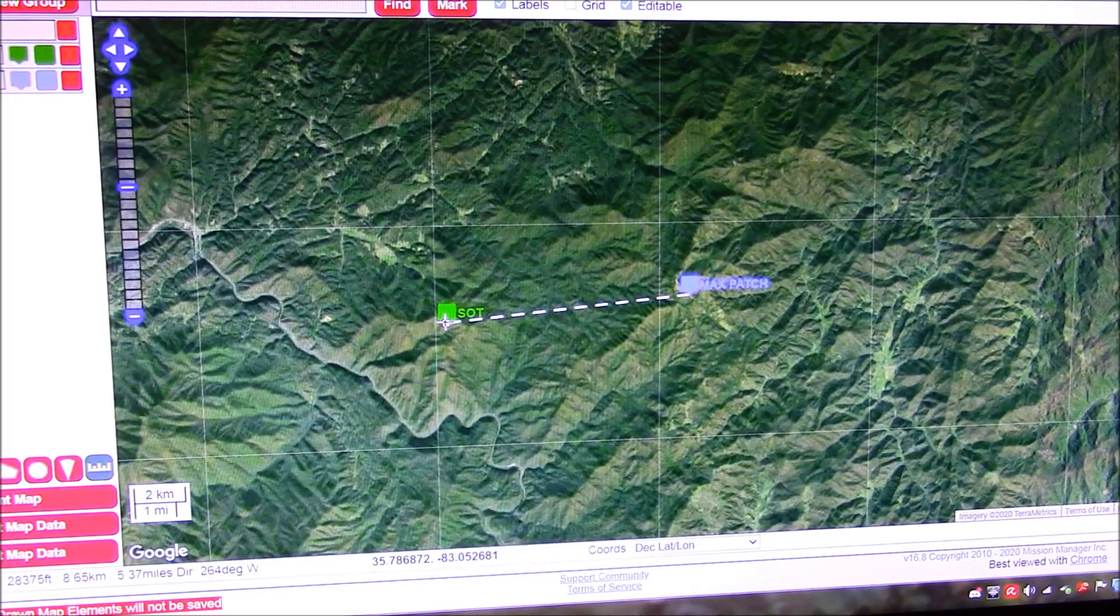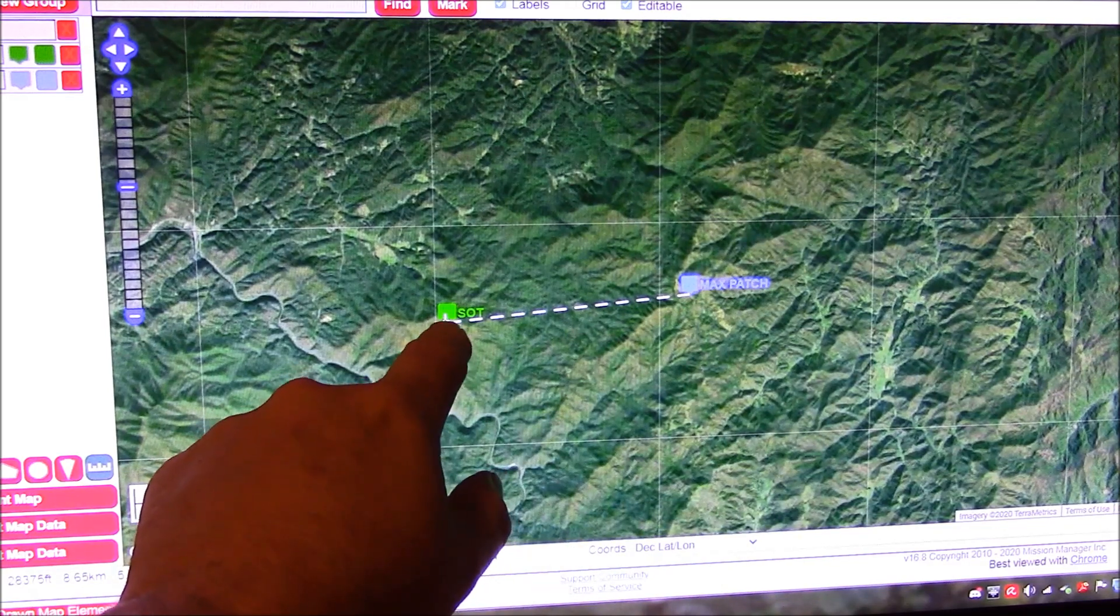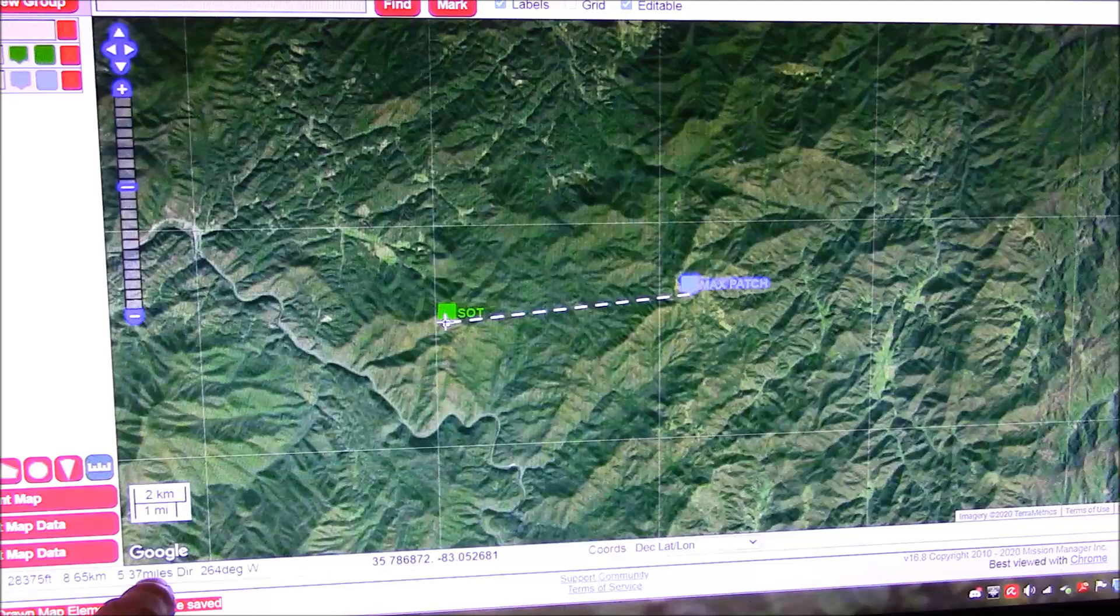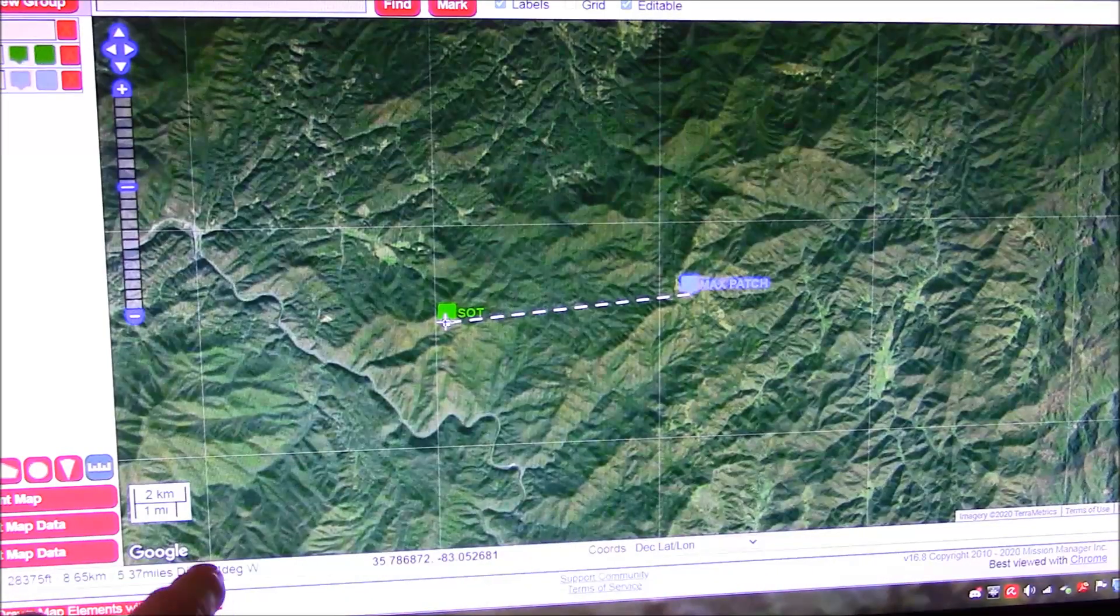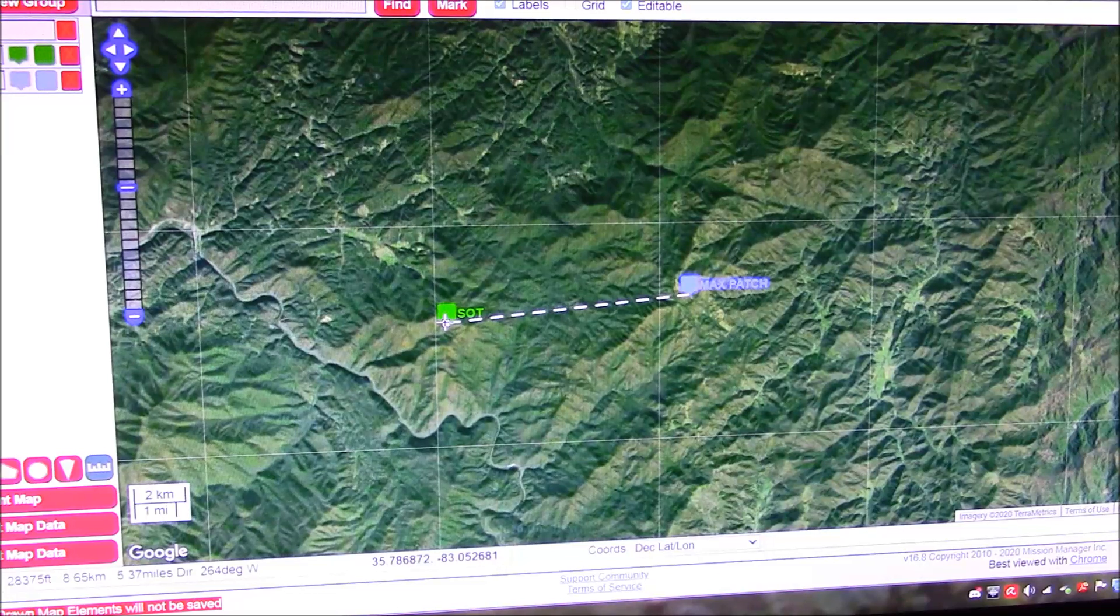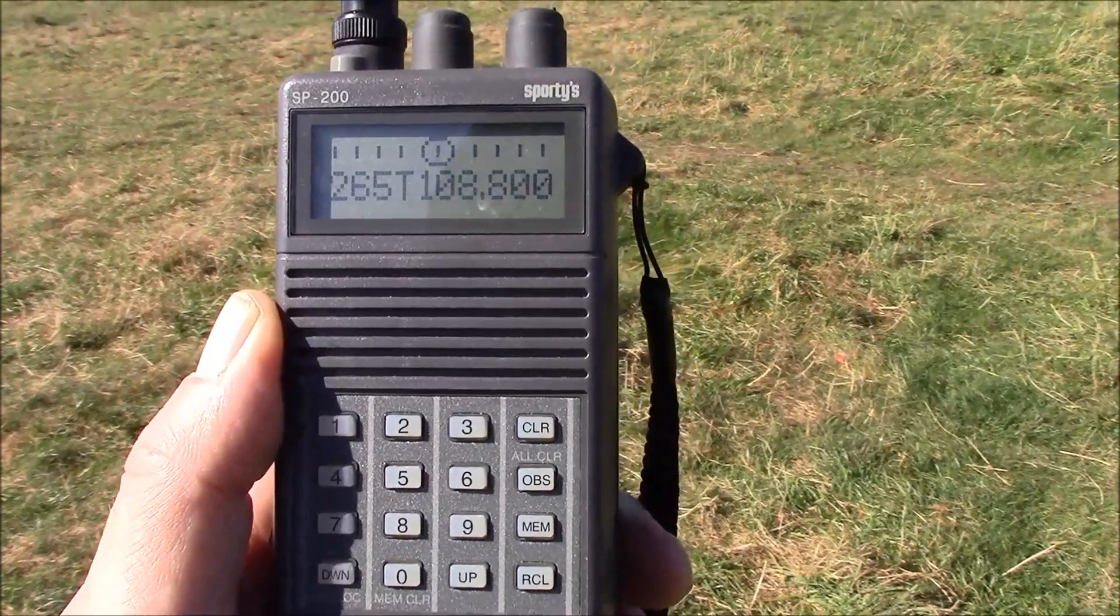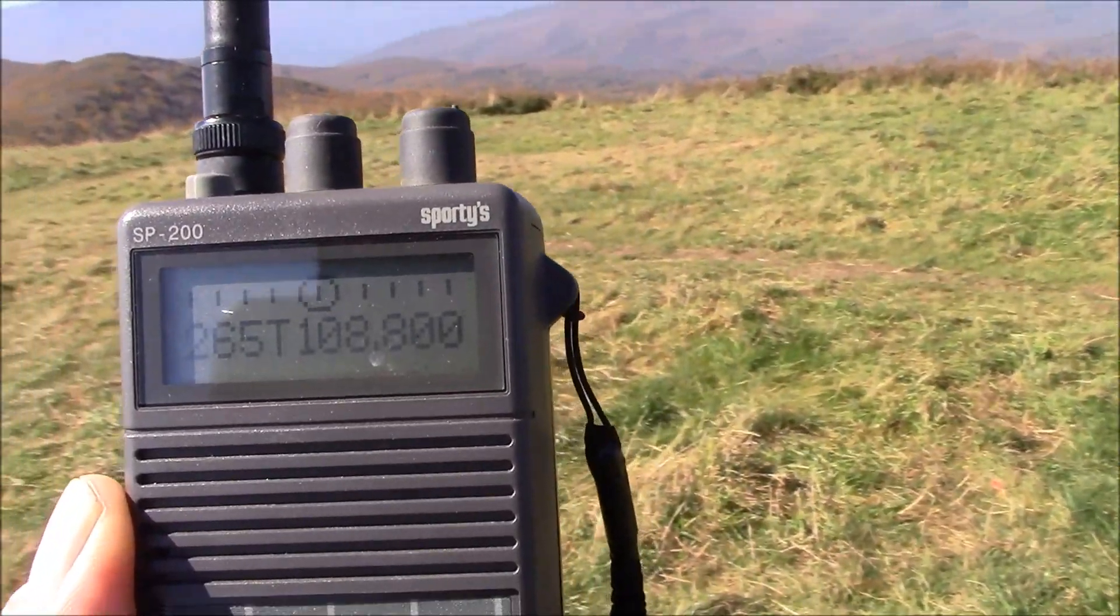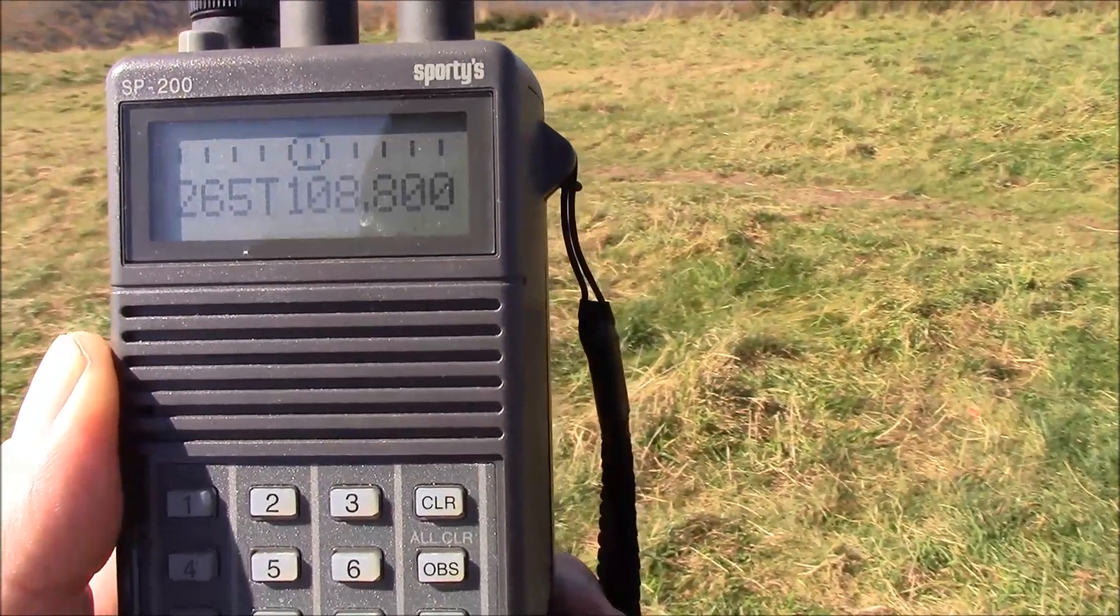Using Mission Manager, we can see here's Max Patch, and here's the Snowbird Vortac. We're 5.37 miles distance between these two points, and the direction is 264 degrees west. And you can see that we're picking up our Vortac, and you can see the bearing is correct.